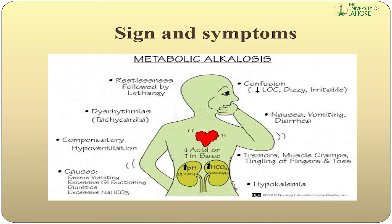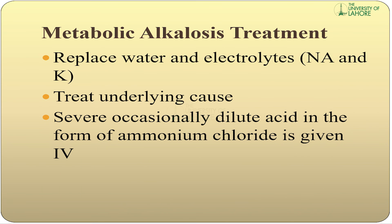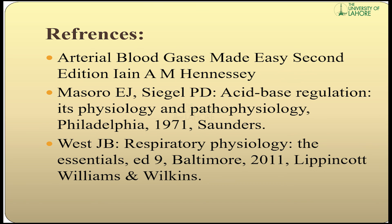Signs and symptoms of metabolic alkalosis include restlessness followed by lethargy, dysarrhythmias, and compensatory hypoventilation. Causes include severe vomiting, excessive GI suction, diuretics, and excessive sodium bicarbonate. Treatment includes replacing water and electrolytes such as sodium and potassium, treating the underlying cause, and occasionally administering dilute acid in the form of ammonium chloride given intravenously.